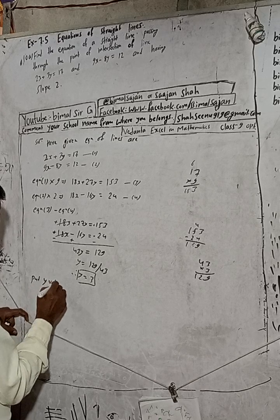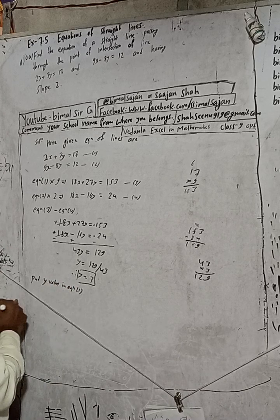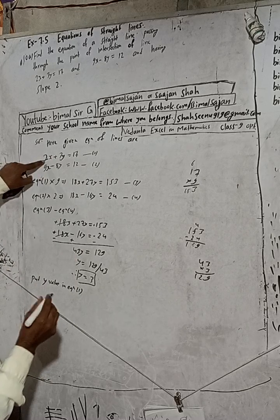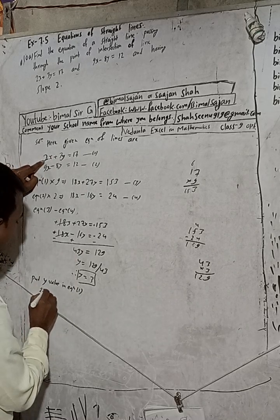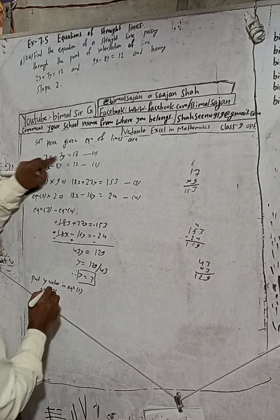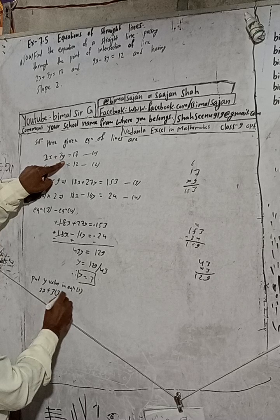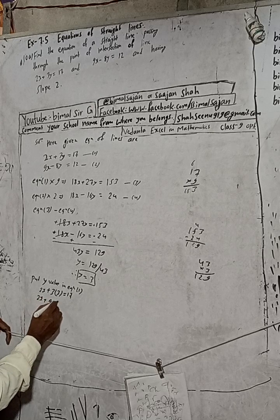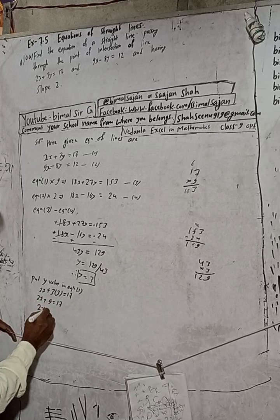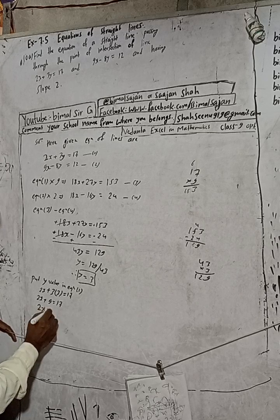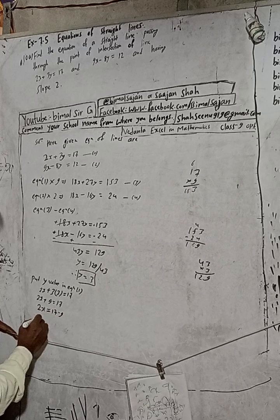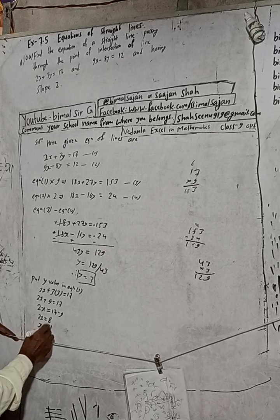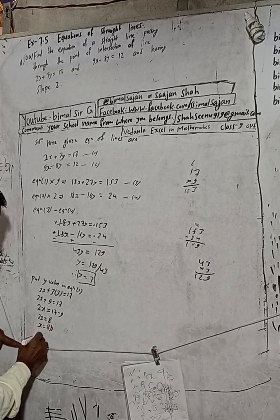Now substituting y = 3 into equation 1: 2x + 3(3) = 17, which gives 2x + 9 = 17. So 2x = 17 - 9 = 8, therefore x = 8 ÷ 2 = 4.